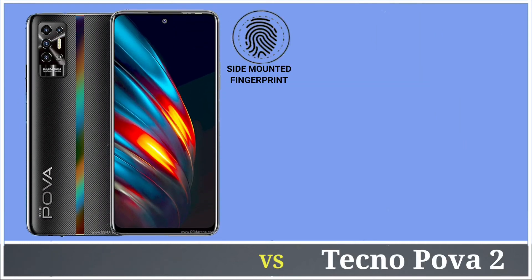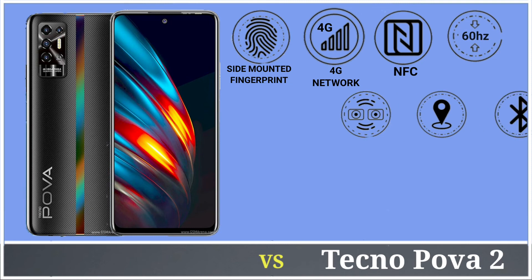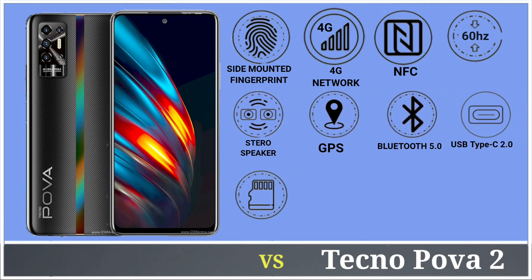Tecno Pova 2 also has a side-mounted fingerprint sensor, supports only 4G network, and has only a 60Hz refresh rate display. It also features stereo speakers, GPS, Bluetooth 5.0, USB Type-C, UFS 2.1 storage, and Wi-Fi.